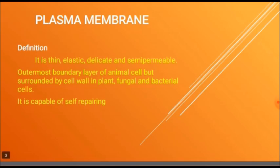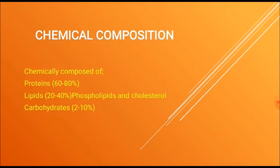It is capable of self-repairing. Chemical composition: the plasma membrane is chemically composed of proteins 60 to 80 percent, lipids 20 to 40 percent — but among lipids, 90 percent are phospholipids and some amounts of cholesterol are also found — and carbohydrates 2 to 10 percent.